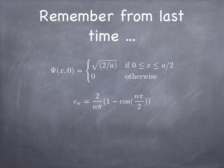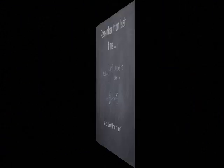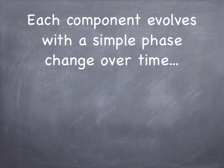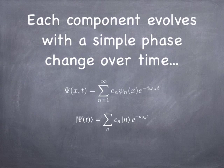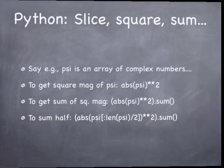What happens to the wave function at later times if it starts in this state? You take each component and multiply it by the phase factor e to the minus i omega sub n times t. In Dirac notation, you take each ket and multiply it by e to the minus i omega n t, and that tells you what the wave function does later. The goal of this computing project is to set the wave function up so that the electron is in the left half of the well, then compute the behavior of the electron at future times.